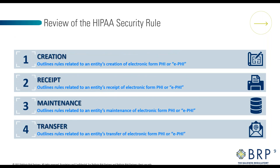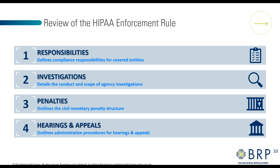The HIPAA security rule outlines the rules for electronic PHI, or ePHI, covering creation, receipt, maintenance, and transfer of electronic PHI. For example, emailing or faxing information electronically that contains PHI. The HIPAA enforcement rule defines compliance responsibilities for covered entities, outlines the scope of agency investigations, civil monetary penalty structure, and administrative procedures for hearings and appeals.